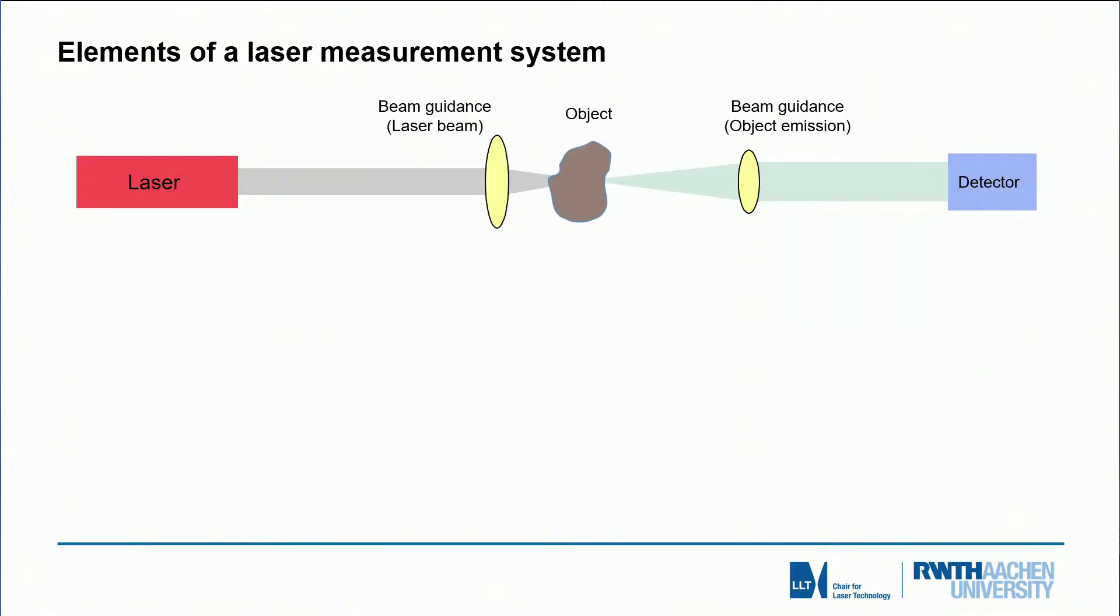Let's start with some ideas on the elements of a laser measurement system. Very generally speaking we have some object and we look at this object and we illuminate it with a laser. Usually we use some imaging to project the radiation onto the object. Then we get some change of the photon flux due to the object either in transmission or in reflection or both. Then usually we have another imaging system and funnel the resulting signal to a detector.